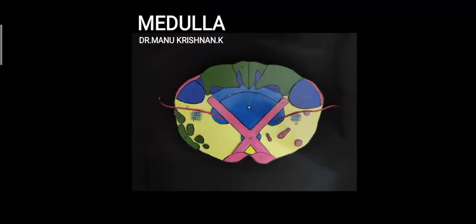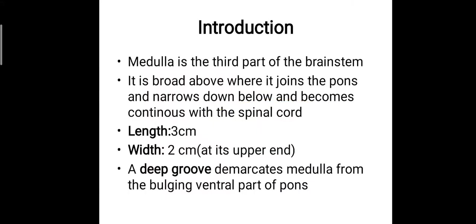Hi everyone, this is Dr. Manu Krishnanki and today we will be discussing the anatomy of the medulla oblongata. The medulla is the third part of the brainstem. As we have already covered, the brainstem is composed of the midbrain, pons, and the medulla. The medulla is broad above where it joins with the pons and narrows below, becoming continuous with the spinal cord. The length is 3 cm while the width at its upper end is 2 cm. There is a deep groove which demarcates the medulla from the bulging ventral part of the pons.